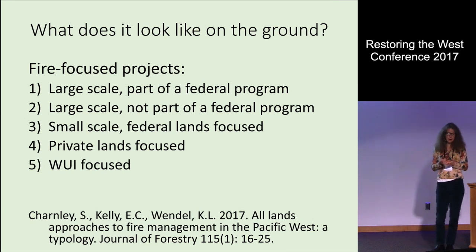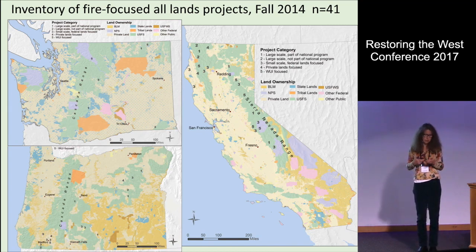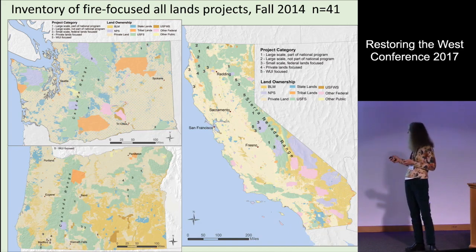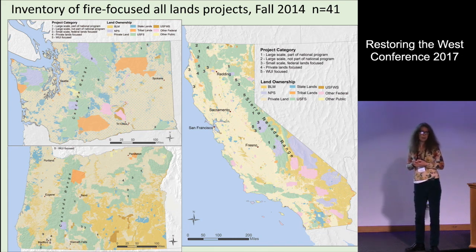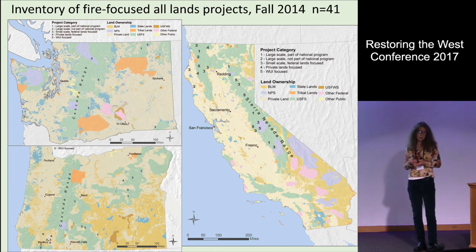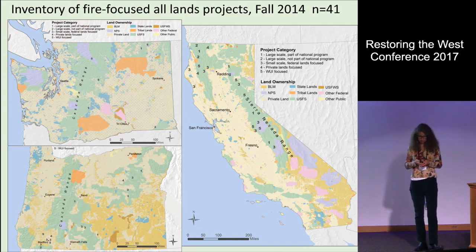How widespread are these projects? In our inventory conducted in the fall of 2014, we found 41 projects across Washington, Oregon, and Northern California, and certainly more projects have arisen since then. These are just fire projects, so this is an approach that's becoming more and more widespread.